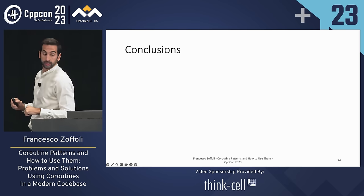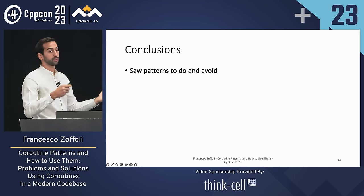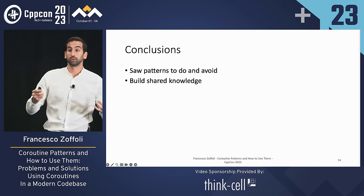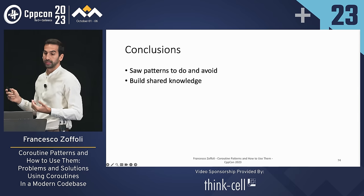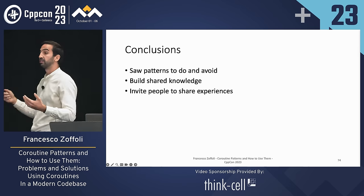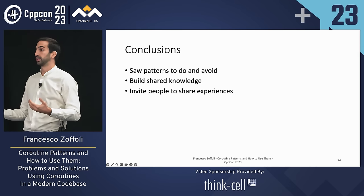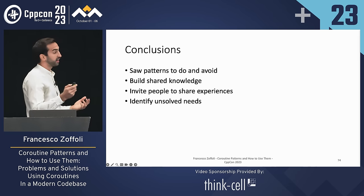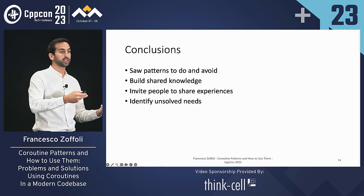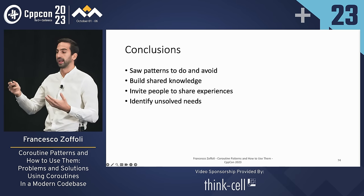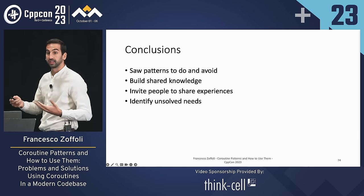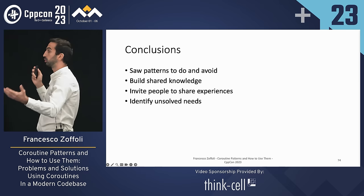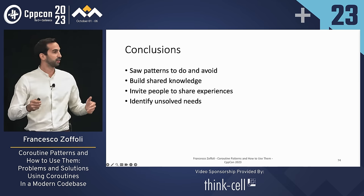In conclusion, we saw some patterns about things we can do and things to avoid with coroutines. We built some shared knowledge about these patterns that we can apply in our codebases. I invite all of you to also share your experiences — what you find working and not working using coroutines in your codebase. Hopefully together, by sharing what works and where we find gaps, we can work together to find solutions and potentially evolve the language to fix this and get to a state where C++ using coroutines is as effective as the C++ we've used for the last forty years. Thank you.